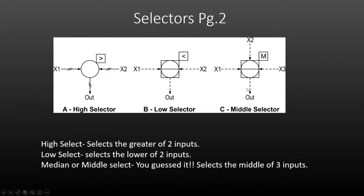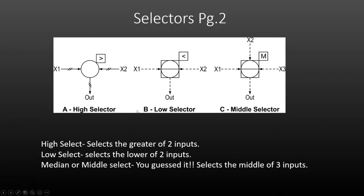The third type is called the middle or median selector, and it will pick the middle out of three measurements. So if X1 was 50, X2 was 60, and X3 was 40, it would pick the 50, which is in the middle of 40 and 60. Pretty straightforward in what they do and what their application is.